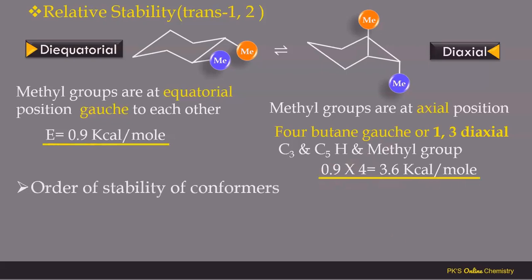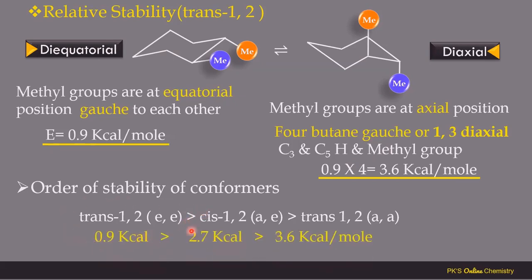Now let's compare the relative stability of cis-1,2- and trans-1,2-dimethylcyclohexane. Trans-1,2-dimethylcyclohexane in the di-equatorial conformation is more stable than cis-1,2-dimethylcyclohexane with its axial-equatorial arrangement, which in turn is more stable than the di-axial conformation of trans-1,2-dimethylcyclohexane. This is the relative stability order of cis and trans-1,2-dimethylcyclohexane.